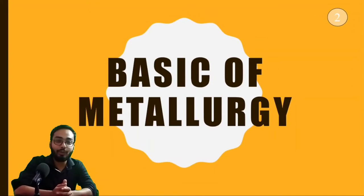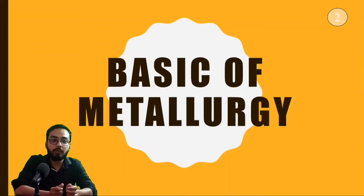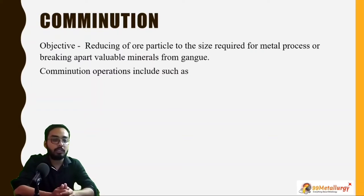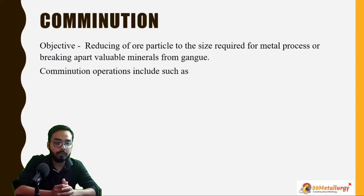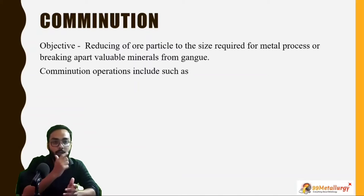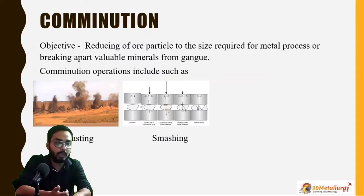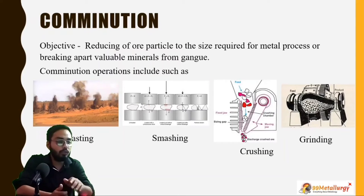Hello everyone, my name is Abdullah and you are watching 99 Metallurgy. In lesson 1 we learned that minerals and ores are extracted from the earth's crust. After that we extract the valueless material from the minerals — for this we do the comminution process. Comminution is the reduction of particles into smaller sizes. The main objective is to reduce particle size and also remove valueless minerals from the gangue. There are various operations: blasting, smashing, crushing, and grinding.